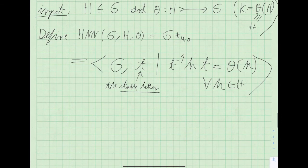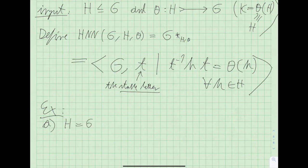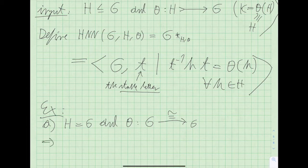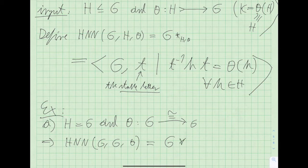Let me briefly mention some examples. If you set H equal to G and take theta to be an automorphism of G, then the HNN extension of G relative to G and this automorphism is the semi-direct product of G by Z.